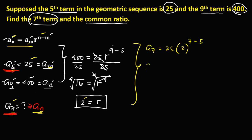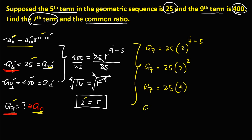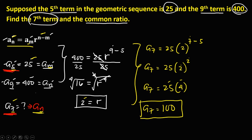Then simplify: a sub 7 equals 25 times 2 to the power 7 minus 5, that's 2 to the power 2. So a sub 7 equals 25 times 2 to the power 2, that's 4. So therefore, the 7th term is 25 times 4, that's 100. So the 7th term is 100.